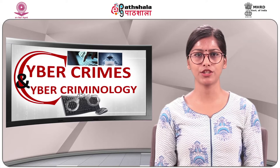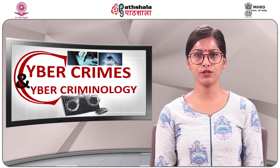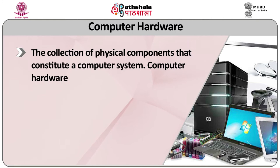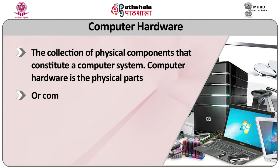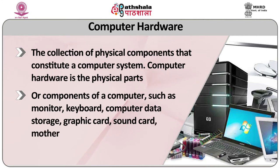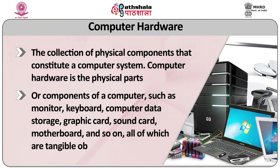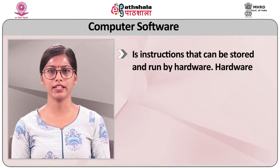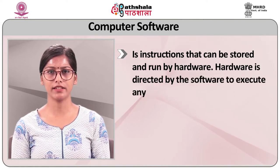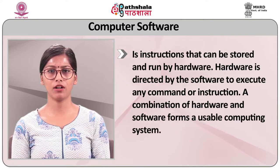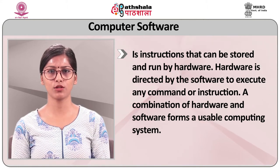Some basic computer knowledge will be covered in this module. Computer hardware is the collection of physical components that constitute a computer, such as monitor, keyboard, computer data storage, graphic card, sound card, motherboard, and so on — all of which are tangible objects. By contrast, software is instructions that can be stored and run by hardware. Hardware is directed by the software to execute any command or instruction. A combination of hardware and software forms a usable computing system.